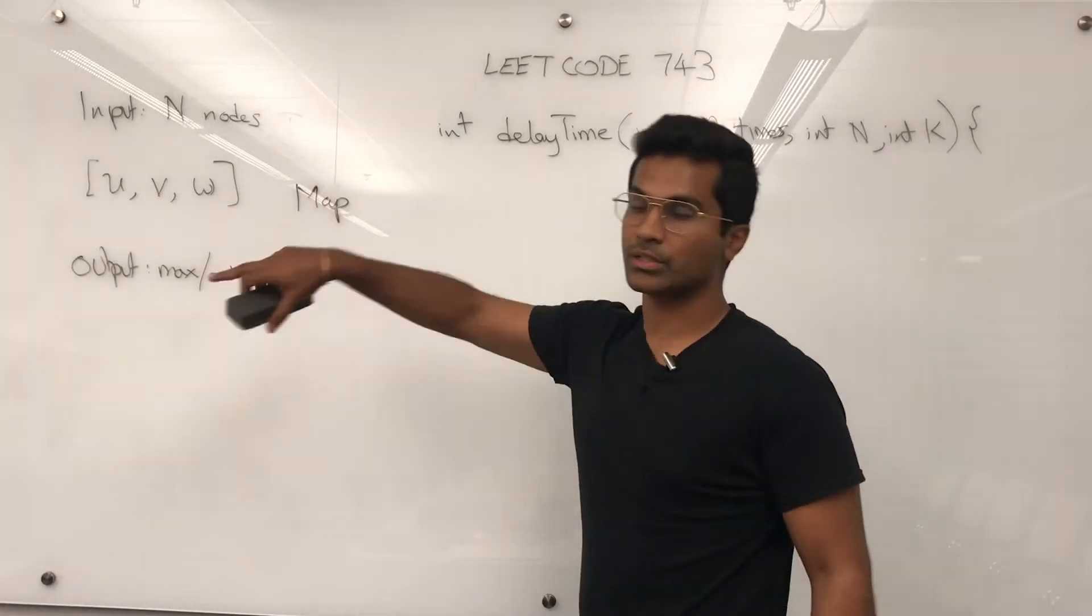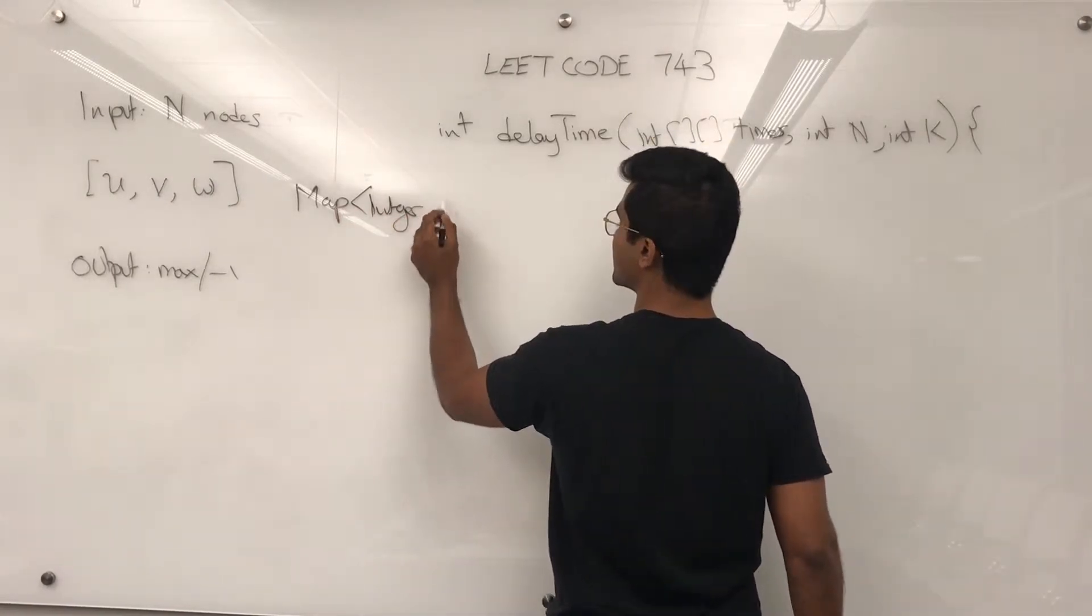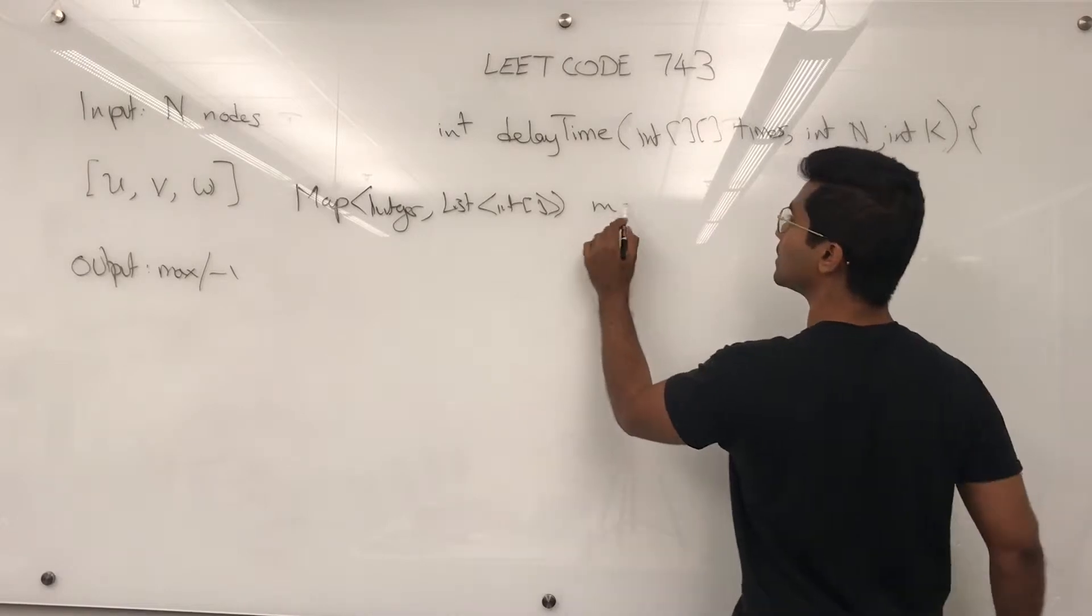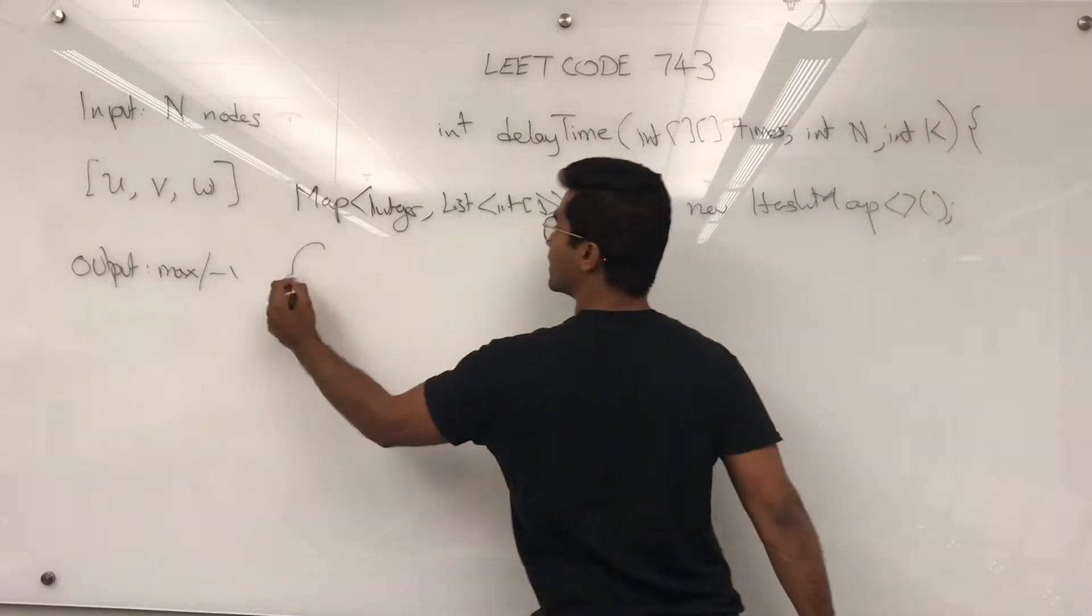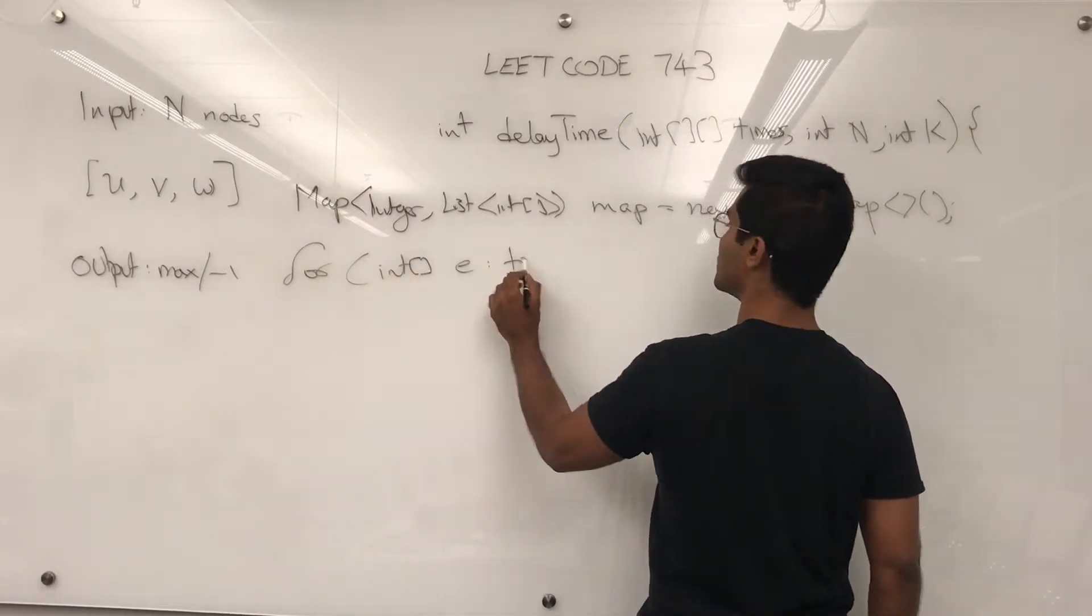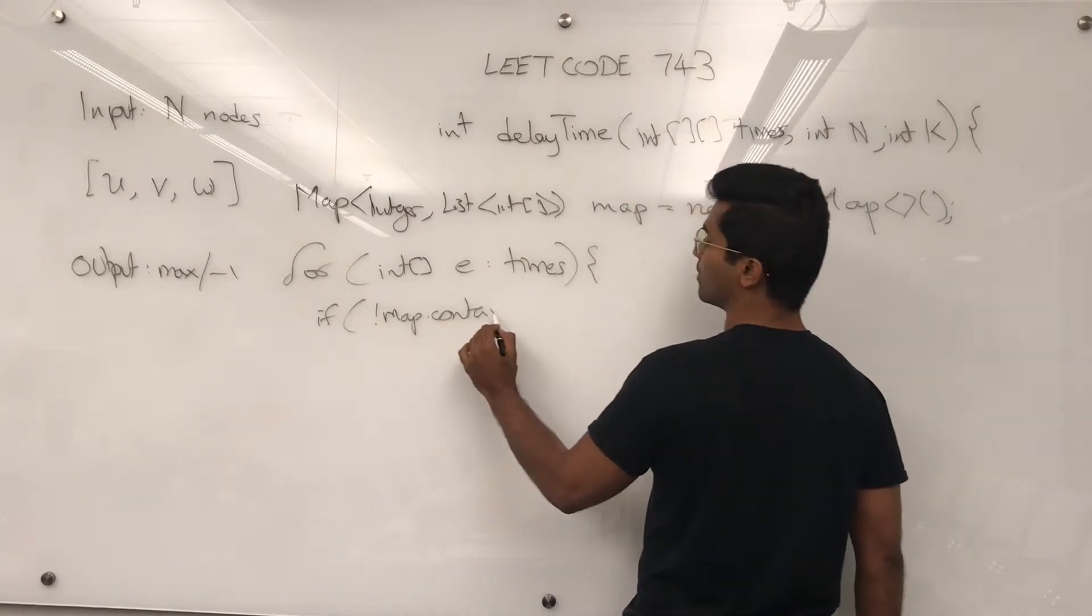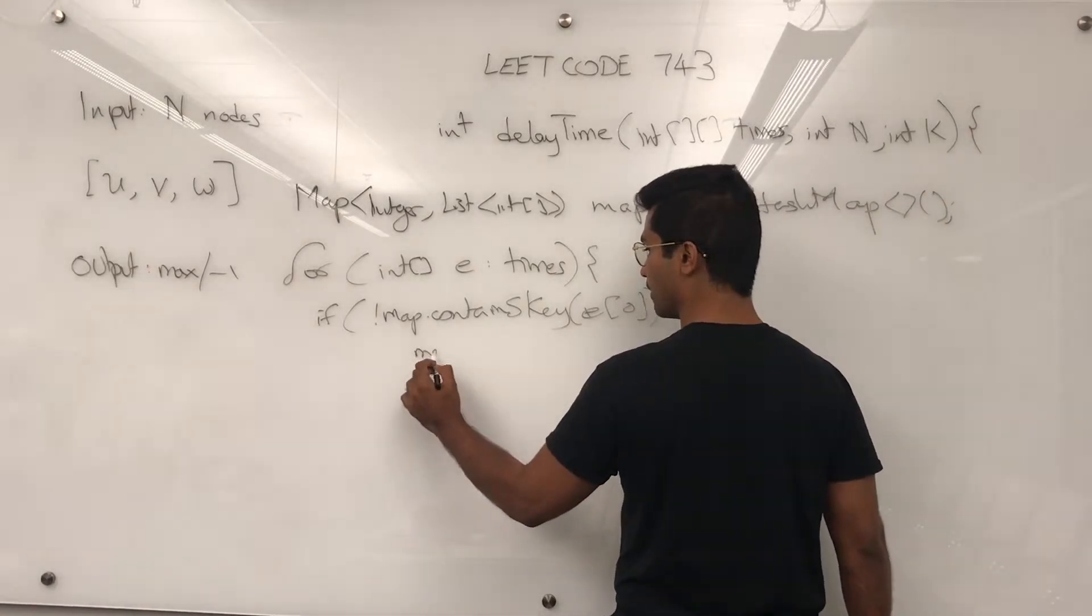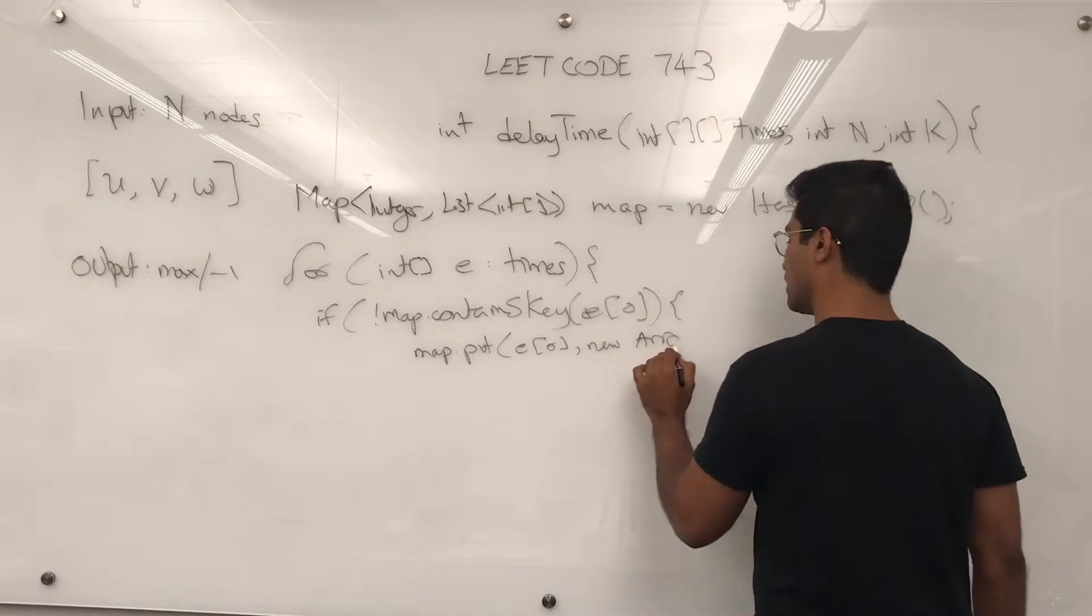First we're going to convert this adjacency matrix into a sort of adjacency list representation of a graph. This is going to be a list of integer array, and this is going to be a graph. We'll call it map, new hash map. And for int array e for edges through times, what we're going to do is if the map doesn't contain that key, then we're going to add a new array list. Map.put E0 new array list.